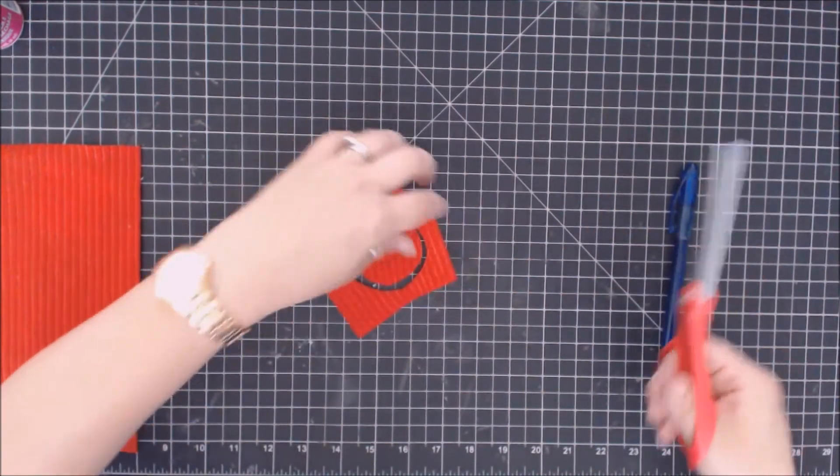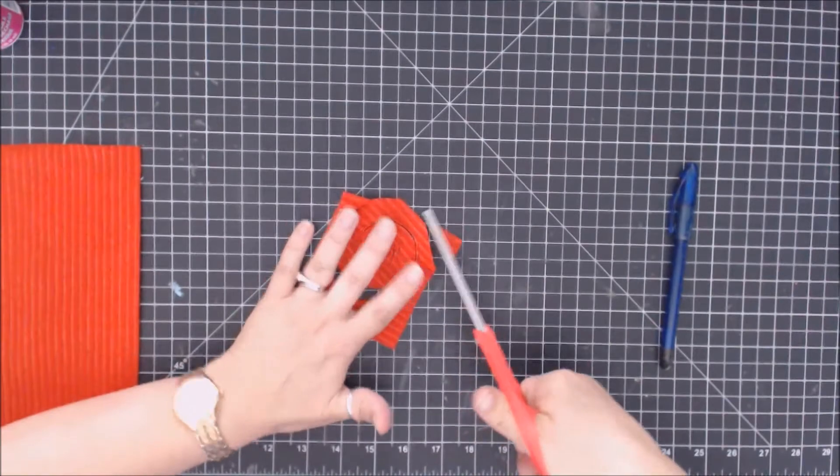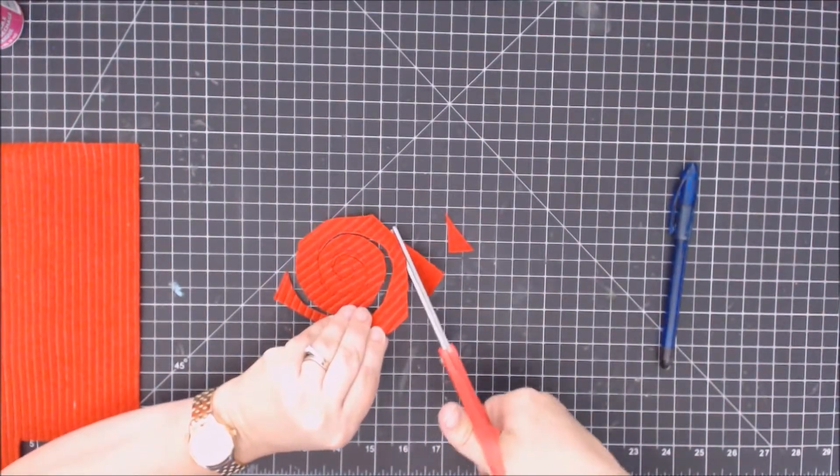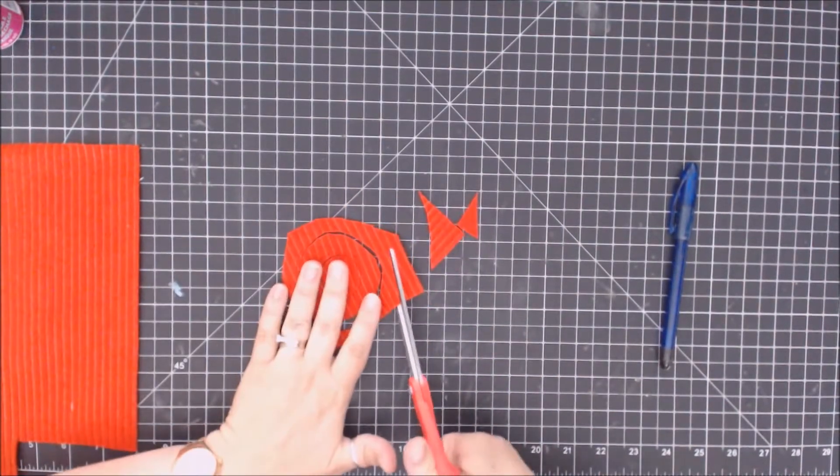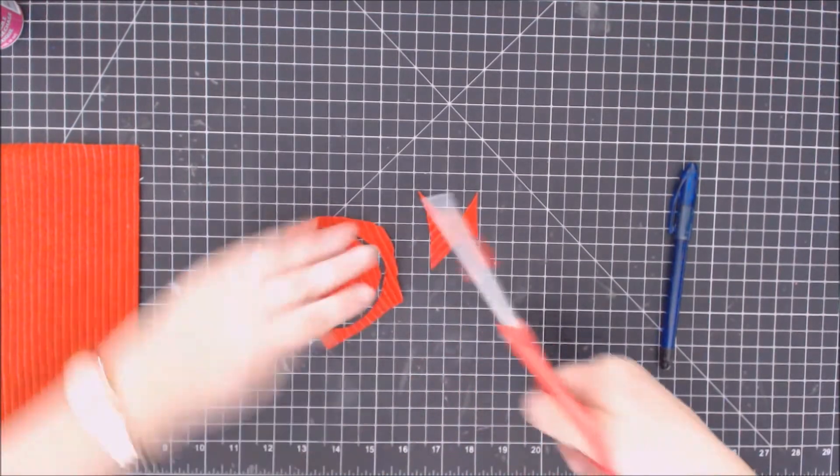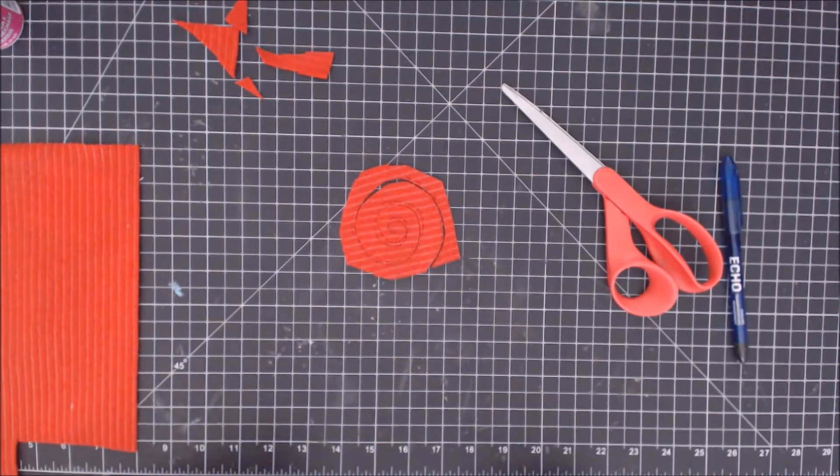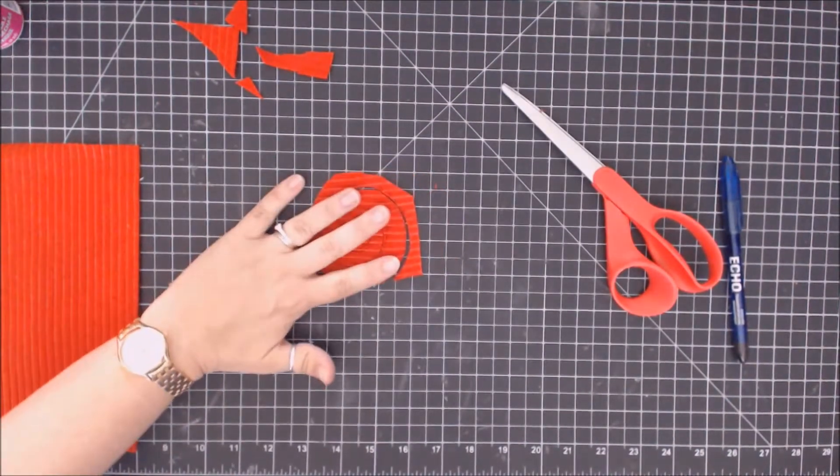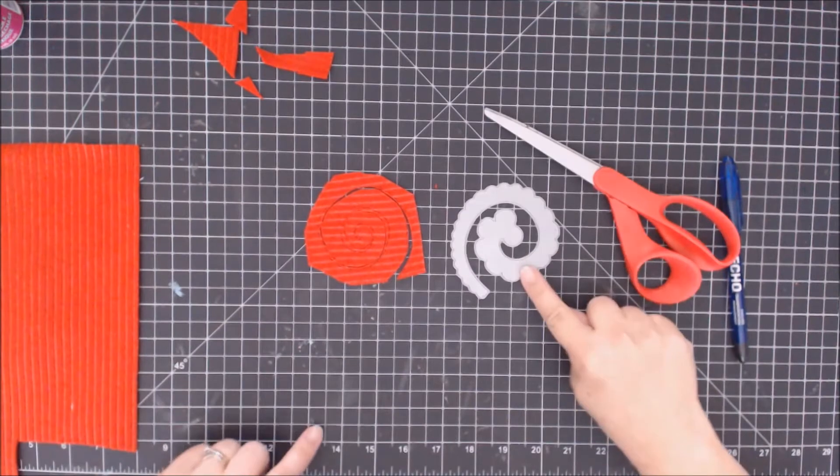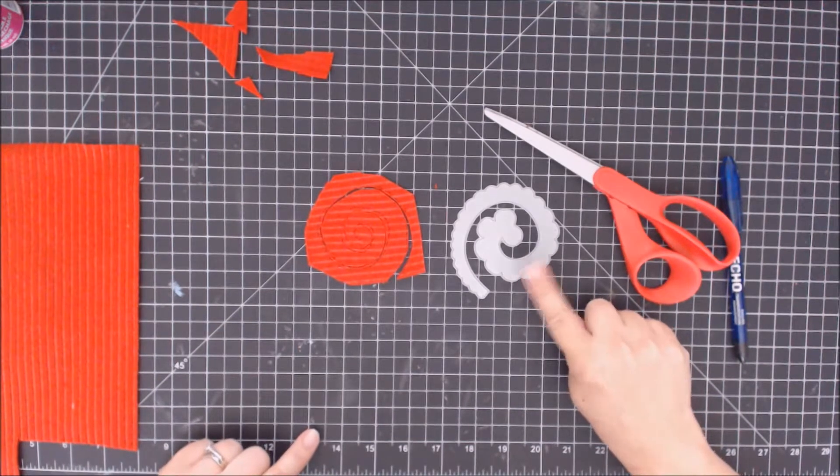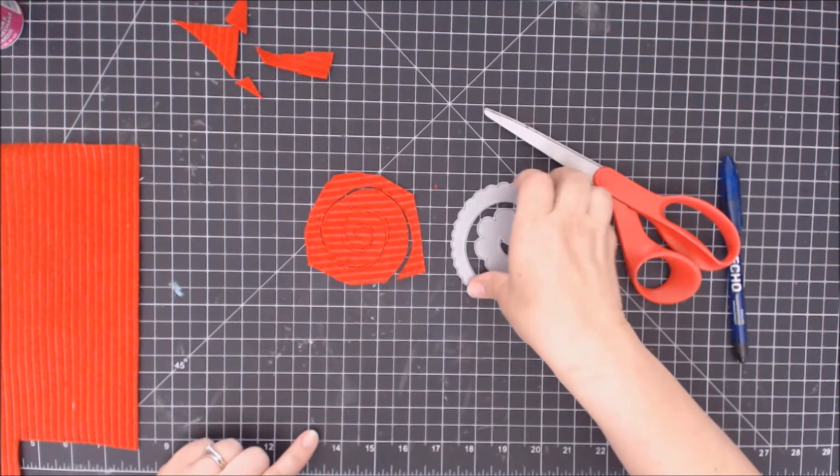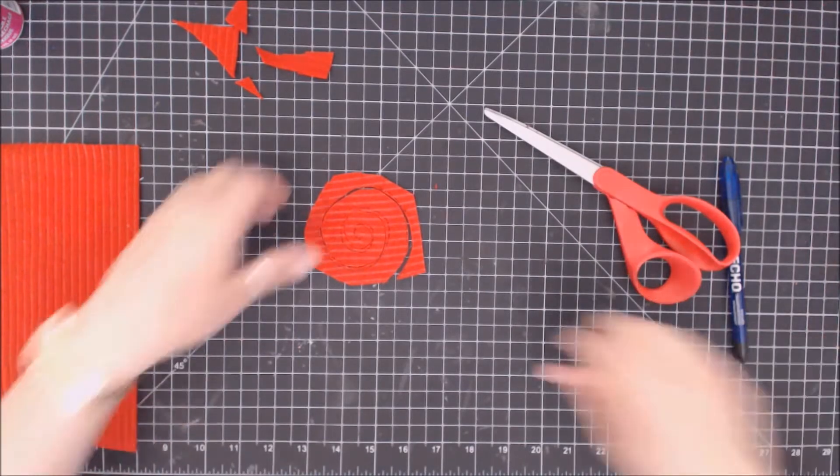Once you have your spiral cut out, go ahead and trim off the excess to make it look like it's a true spiral. Just trim off those little edges that don't make sense. And leaving one corner there is absolutely fine. If you don't want to do this and have the girls draw or you personally draw and cut out, you could also use a spiral die in your die cut machine. And I'll show you how die cuts work here in a minute on one of our next swaps.